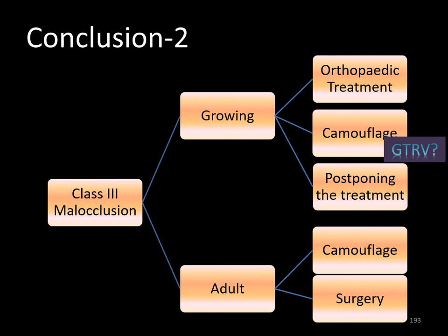The camouflage treatment decision is multifactorial. Lower incisor inclination and the supporting tissues should be considered. It is important to note that habitual forward positioning of the mandible should be corrected as soon as possible, and protraction of the maxilla is effective in patients younger than 11 presenting maxillary retrognathia. Thank you for your attention.